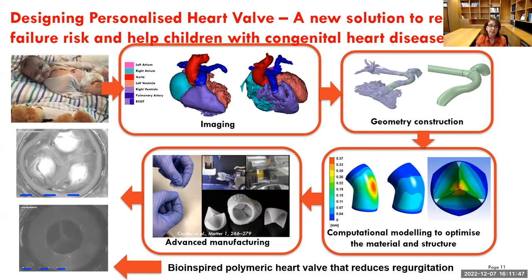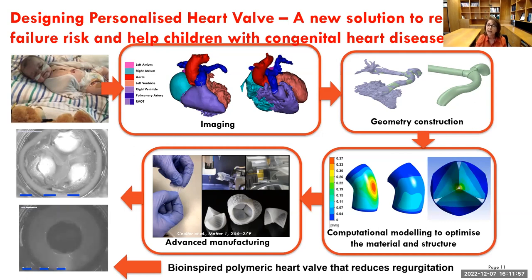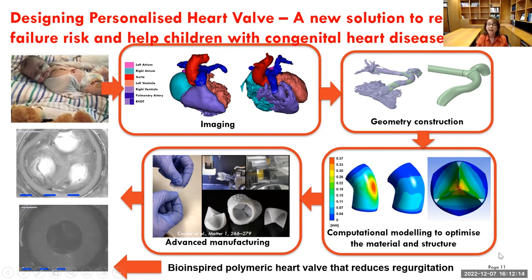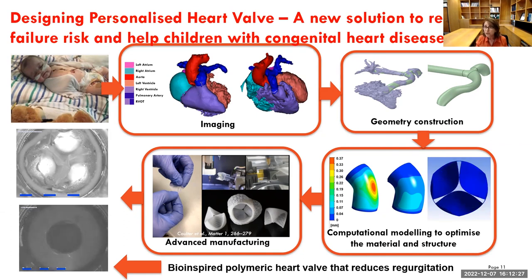We used our chemical engineering knowledge and skills to design equipment — called a pulse duplicator — that helps us look at the performance of this heart valve under simulated body conditions. You can see that the heart valve we designed can actually open and close. We are hoping that in future we can use this new next-generation polymeric heart valve for the treatment of these children, who usually have to undergo many operations during their life with very high risk of morbidity.